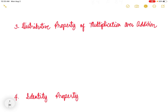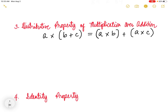Next is the distributive property of multiplication over addition. This property states that the product of an integer and the sum of the other two integers is equal to the sum of the individual products of the integer with each of the addends. In symbols, that is a times the quantity of b plus c equals a times b plus a times c. We just distribute a to each term of the binomial.